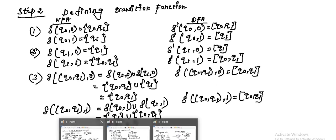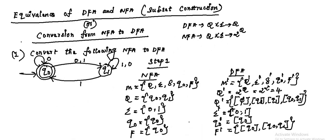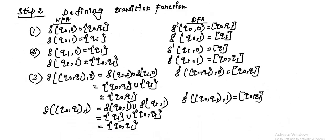Looking at the transition diagram: Q1 with input 0 goes to Q1, and Q1 with input 1 goes to Q0 and Q1. So del(Q1, 0) equals Q1 and del(Q1, 1) equals {Q0, Q1}. Writing the same answer on both sides: del dash of Q1 with input 0 equals Q1, and del dash of Q1 with input 1 equals {Q0, Q1}.